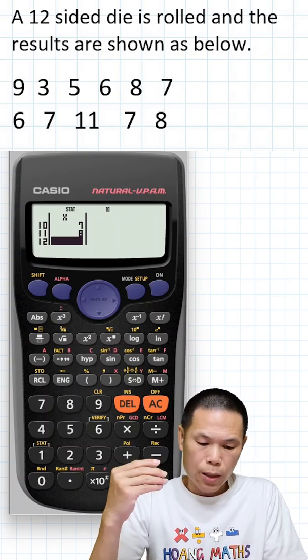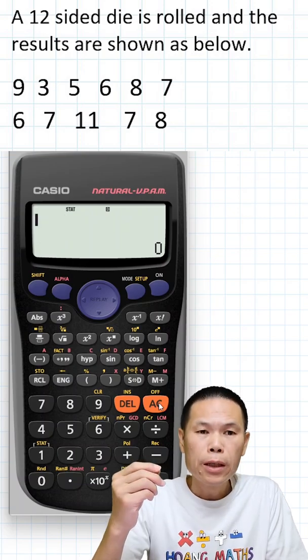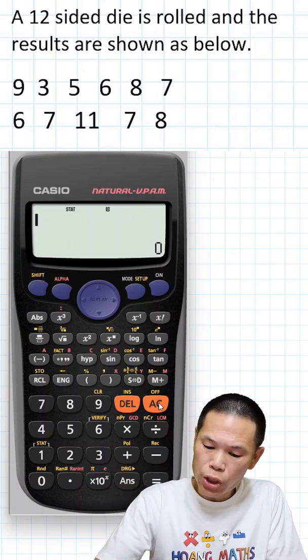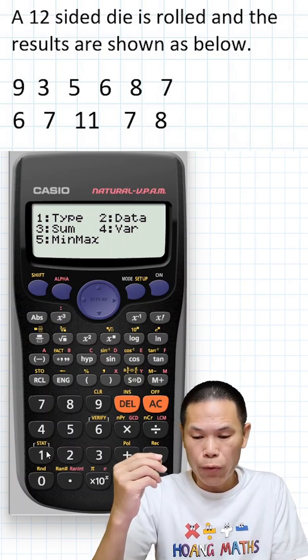Now what we do is clear the screen first. To look for the mean, we need to go shift number one, and then we're going to choose option four under variable.